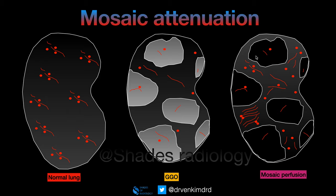Now this is the case of mosaic perfusion. If you see the vessels in the lucent areas of the lung showing decreased density — a decreased number of vessels in the lucent areas — then it is mosaic perfusion. With this image, you should be able to clearly differentiate what is GGO and what is mosaic perfusion.